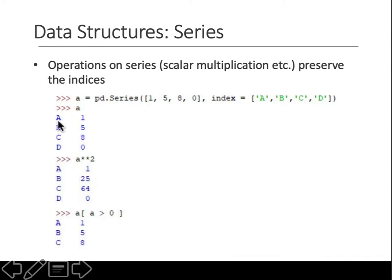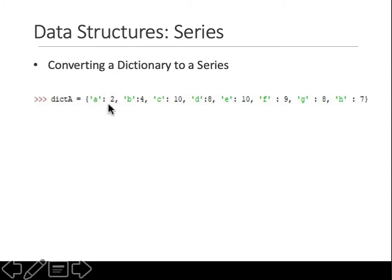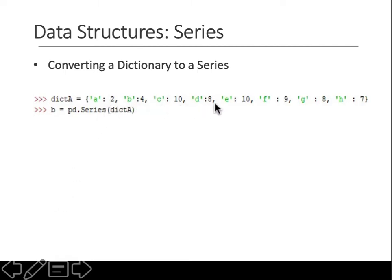Since we have indices, you can think of a Series as a key-value pair — key 'c' has some value. In normal Python, the data structure for key-value pairs is a dictionary. So you can convert a dictionary into a Series: just call pd.Series and pass the dictionary, just like you pass lists. The keys become the indices — a, b, c, d — and the values are 2, 4, 10, 8.